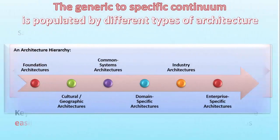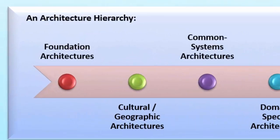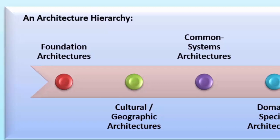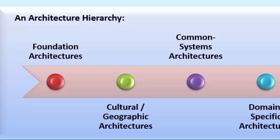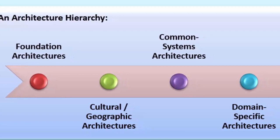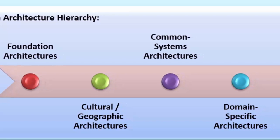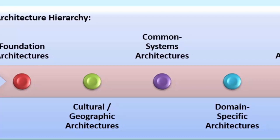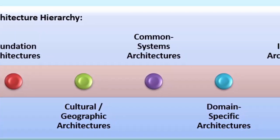Looking at that continuum, it represents a gradual change from generic to specific, but there are specific points along it — different types of architecture that populate different parts. Here is an architecture hierarchy I use with my clients. It ranges from foundation architectures — the very generic principles, protocols, and patterns repeated across every enterprise architecture. For example, the eight fundamental factors that form the meta framework for many enterprise architecture programs. Those eight factors are part of the foundation architecture: foundational principles that apply in every situation.